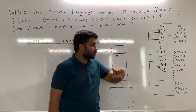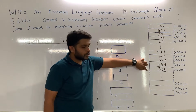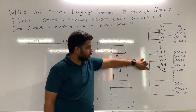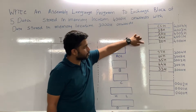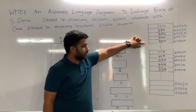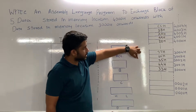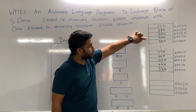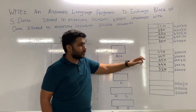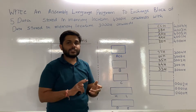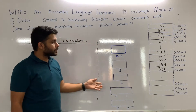The data stored in 4000H will be transferred to 3000H, and the data stored in 3000H will be transferred to 4000H. After that, the data stored in 3001H will be transferred to 4001H, and from 4001H it will be transferred to 3001H. So we have to exchange the data.